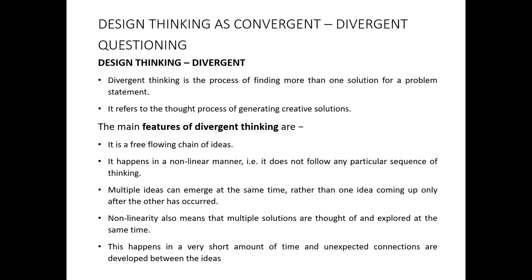There are certain features of divergent thinking that you should understand. First, it is a free-flowing chain of ideas. In divergent thinking, we start from a problem — a customer's problem — and we generate as many ideas as possible. We do not check whether these ideas are workable or not; we try to generate the maximum number of ideas. It happens in a non-linear manner. There is no sequence of thinking, and every person involved is free to think in their own way. There is no defined method that the person has to follow.